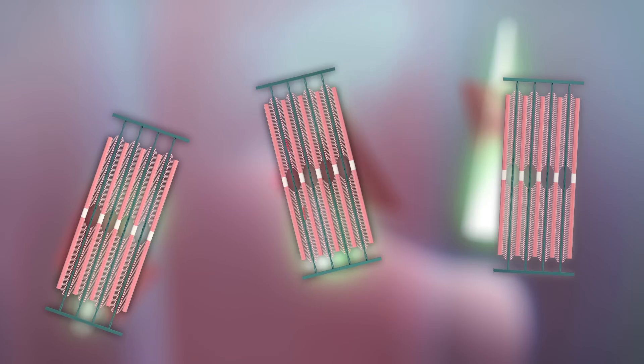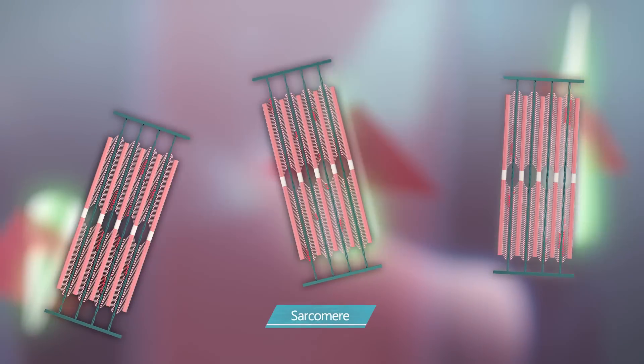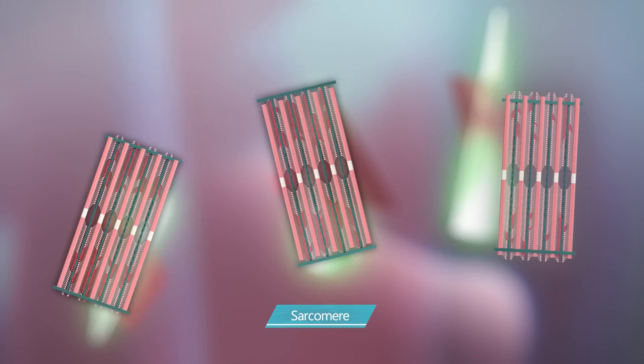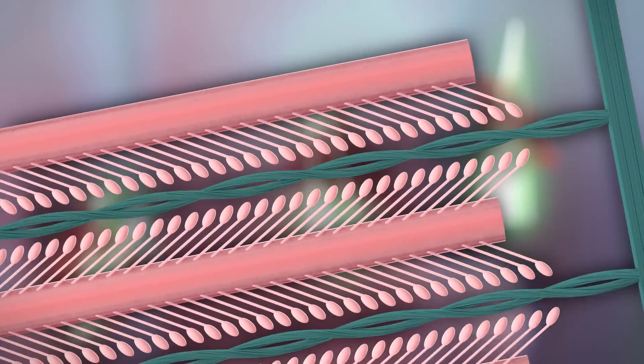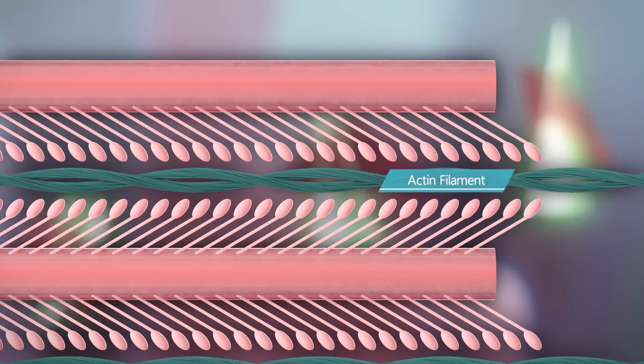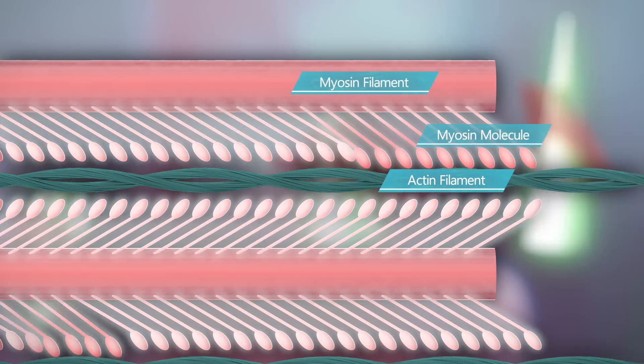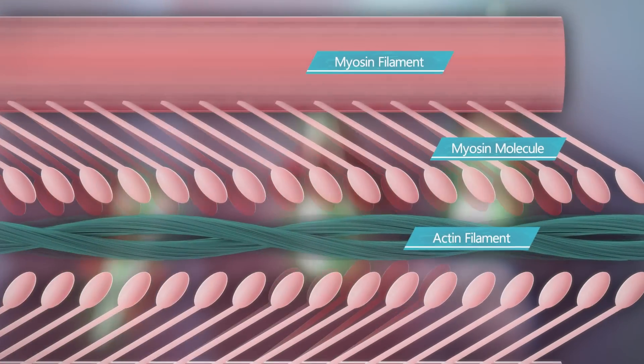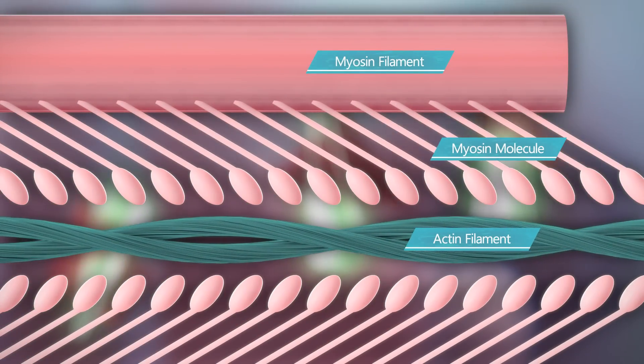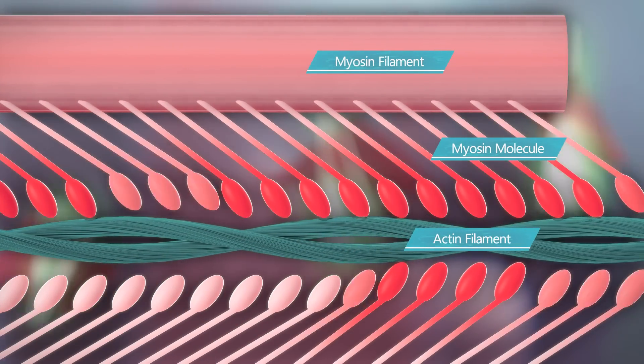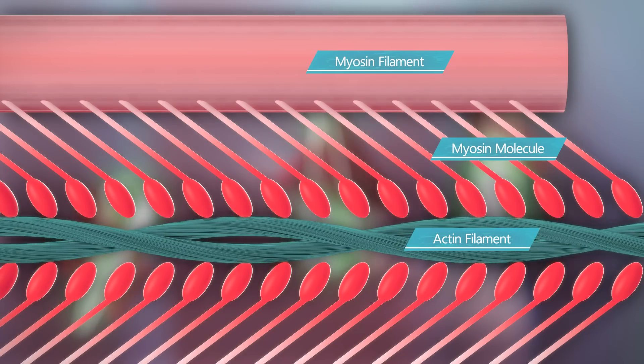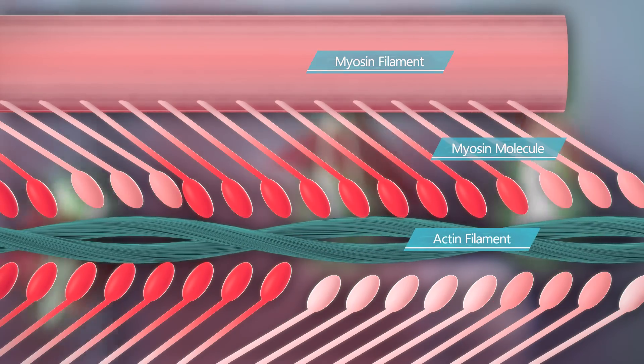Muscle fibers have a structure known as the sarcomere, and this creates contraction. The thin fiber is the actin filament. The thick fiber is the myosin filament. Myosin molecules protrude from the myosin filament. The myosin molecules stick to the actin filament and perform a power stroke to contract the sarcomere. This causes the whole heart to contract.